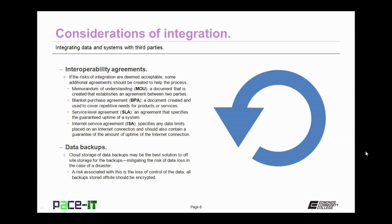Then you need to consider Interoperability Agreements. If the risks of integration are deemed acceptable, some additional agreements should be created to help the process along. There should be a Memorandum of Understanding — a document that establishes an agreement between two parties. Another document that might be needed is a Blanket Purchase Agreement, used to cover repetitive needs for products or services. There should be a Service Level Agreement, or SLA, which specifies the guaranteed uptime of a system. And finally, there may be the need for an Internet Service Agreement, which specifies any data limits placed on an internet connection and should also contain a guarantee of the amount of uptime of that connection.